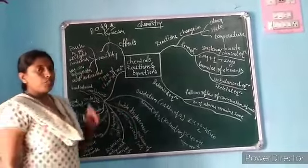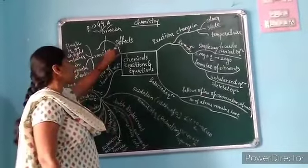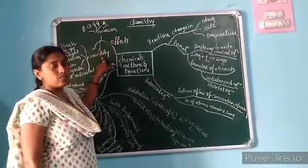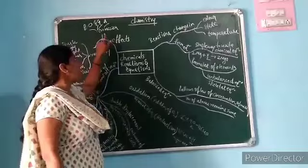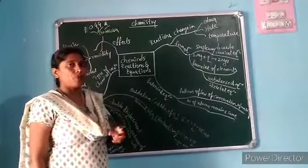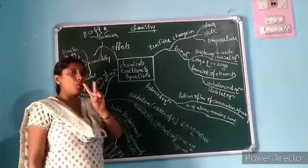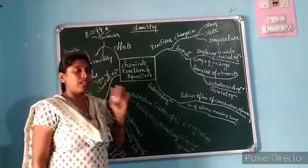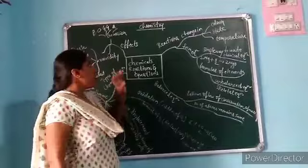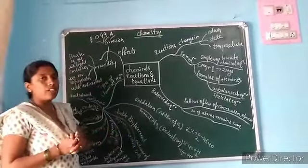Due to chemical reactions, some effects happen. Due to oxidation and reduction, corrosion and rancidity take place. Corrosion means a metal gets oxidized and corroded. There are two components — air and moisture — when a metal comes into contact with air and moisture, it forms a corroded surface. For example, rusted iron. How to prevent corrosion?